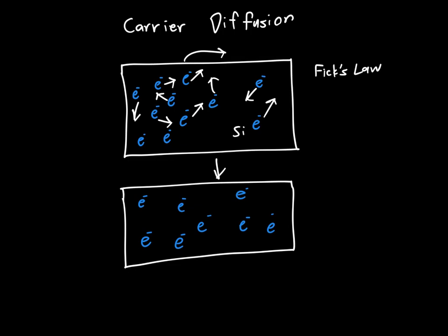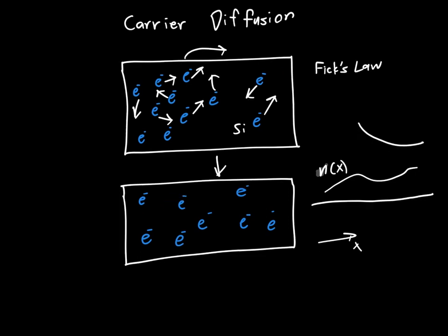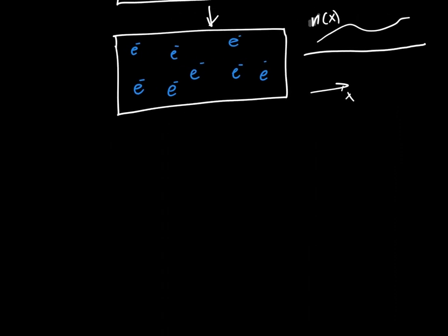Our electron concentration, or our hole concentration — so our electron concentration as a function of x — is not uniform. It's not just a straight line as a function of x. It might be something more complicated, like a curvy line or a decaying exponential. We don't know what the electron concentration is going to look like, especially when we're doing things to the semiconductor. So we want an expression that accounts for this non-uniform distribution, and diffusion is the process that explains that.